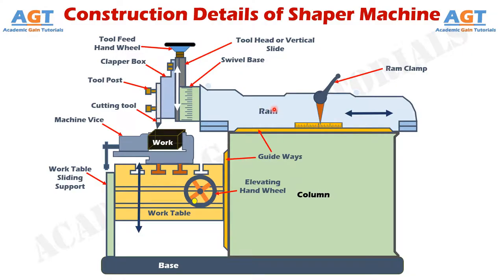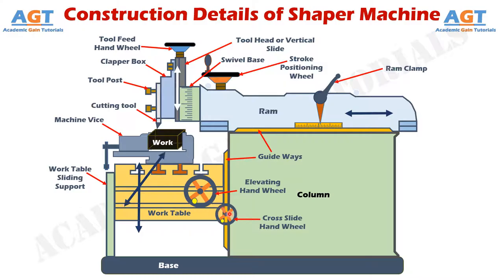On the ram there is a stroke positioning hand wheel. Using this, the position of the stroke of the ram is changed, and thus the cutting tool stroke position is also changed with the ram. At the bottom there is a cross-feed hand wheel, used to give a cross-wise movement to the work table. While the elevating hand wheel moves the work table up and down, the cross-feed hand wheel moves the work table towards front and back — hence it is called the cross-feed hand wheel.